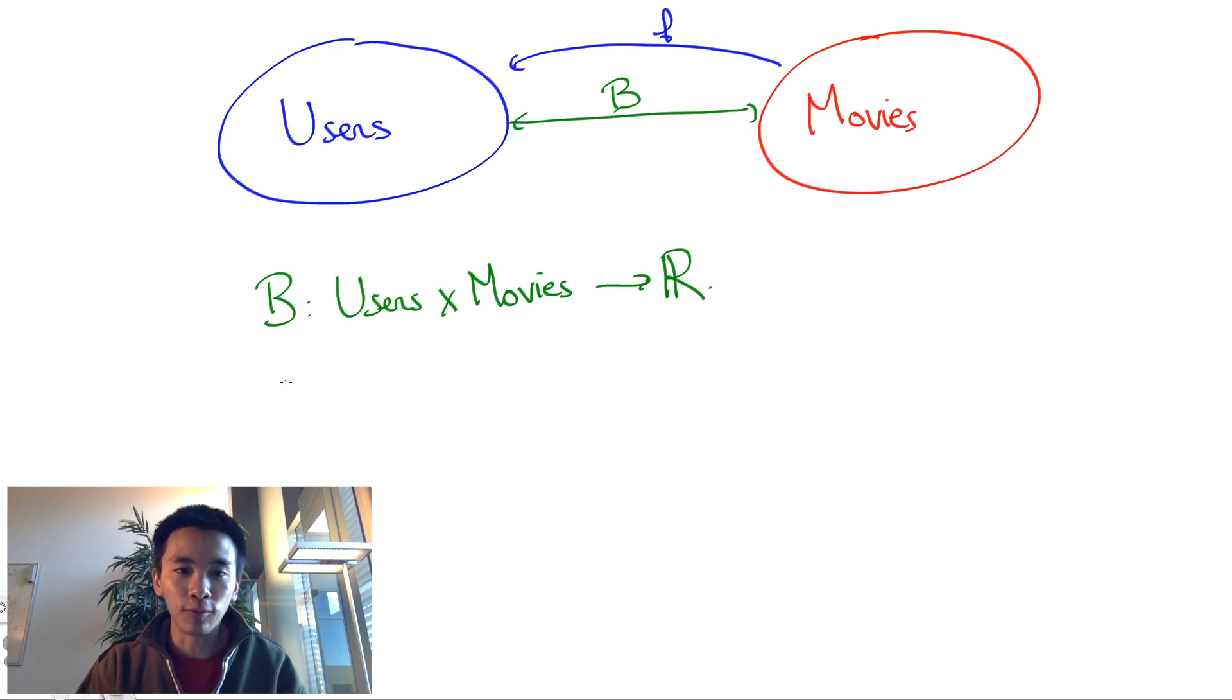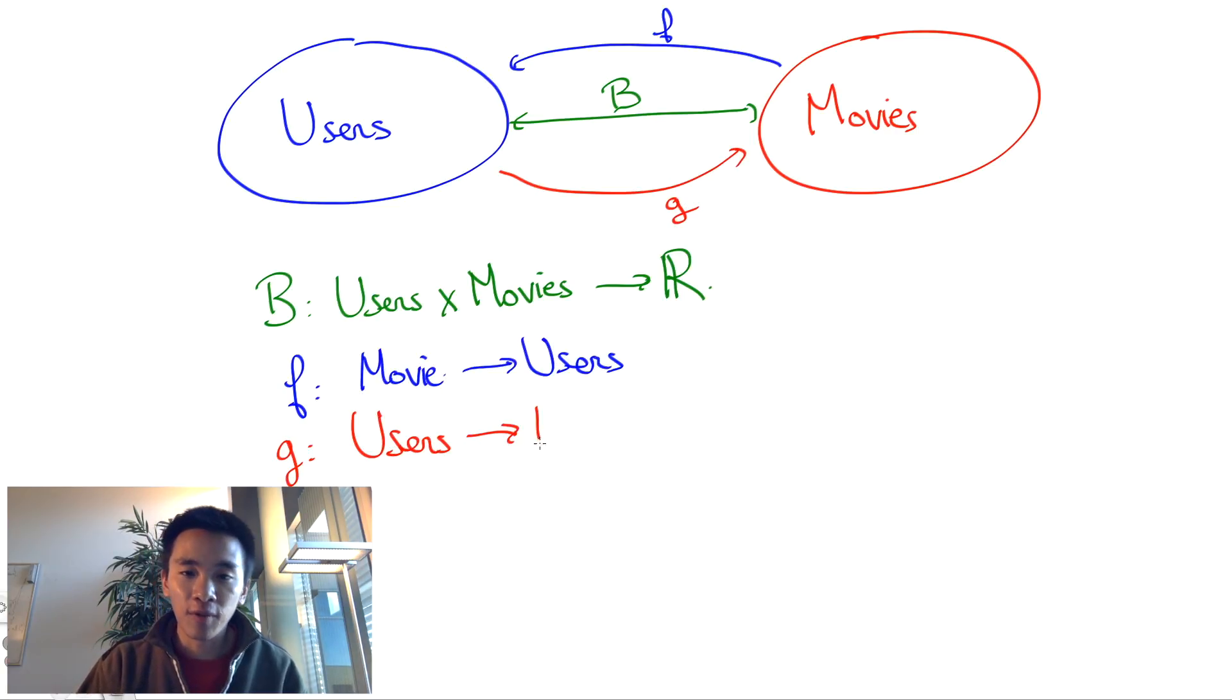Now, this bilinear form allows to define two maps, F and D. F from the set of movies to the set of users and D vice versa.